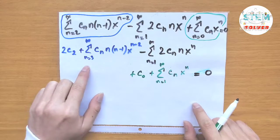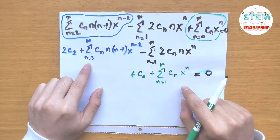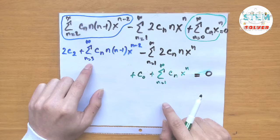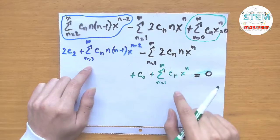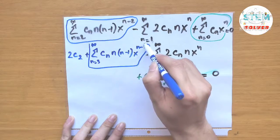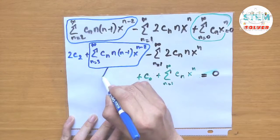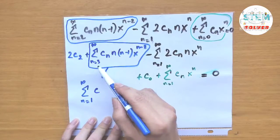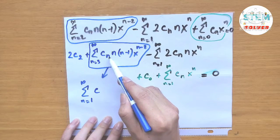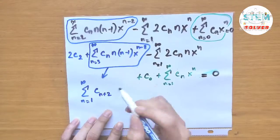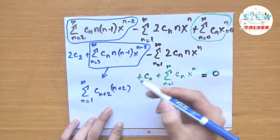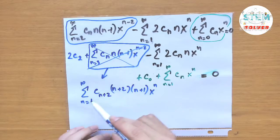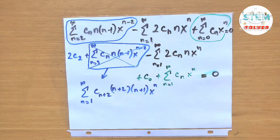Next we re-index the series. We have the indices at n equals 3, n equals 1, and n equals 1. We re-index the y double prime series from n equals 3 down to n equals 1 — lowering by 2 means we increase by 2 every n inside. So we get c_(n+2) times (n+2) times (n+1) times x to the n. Cross out the old series since it's replaced.